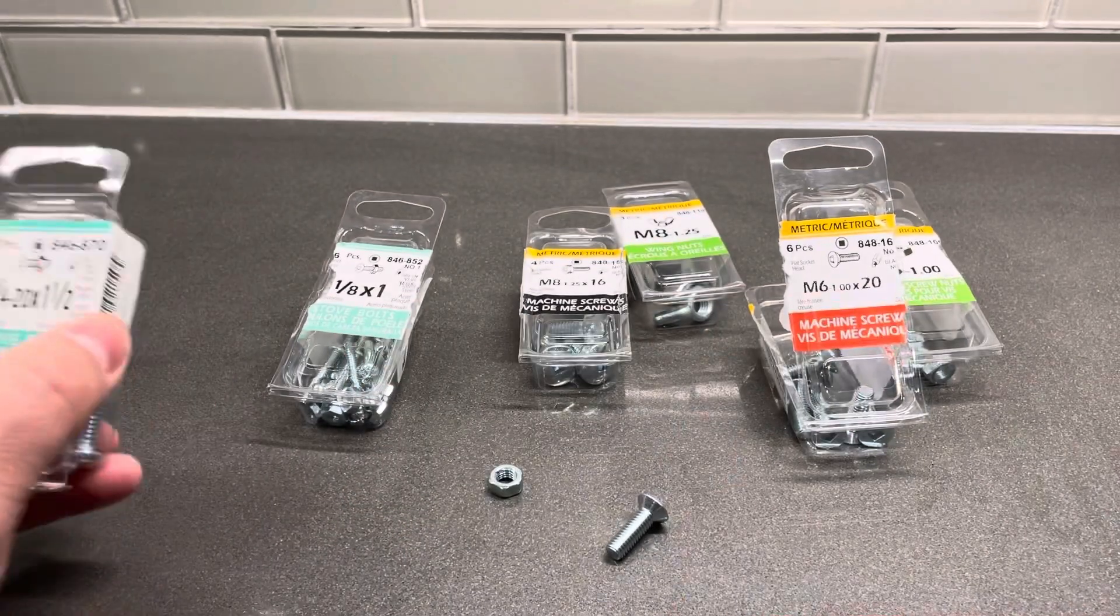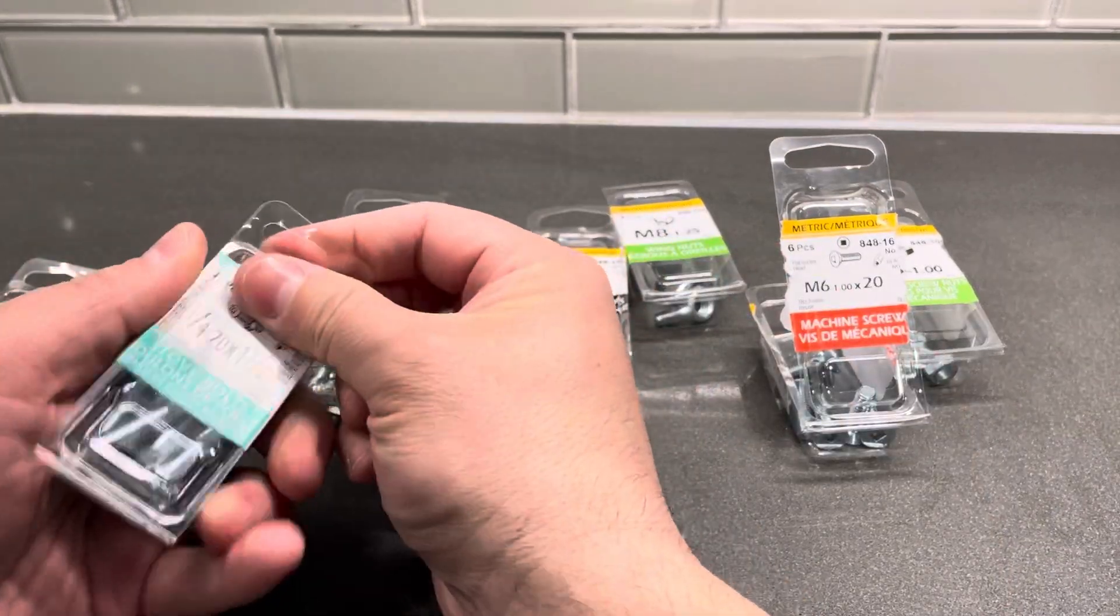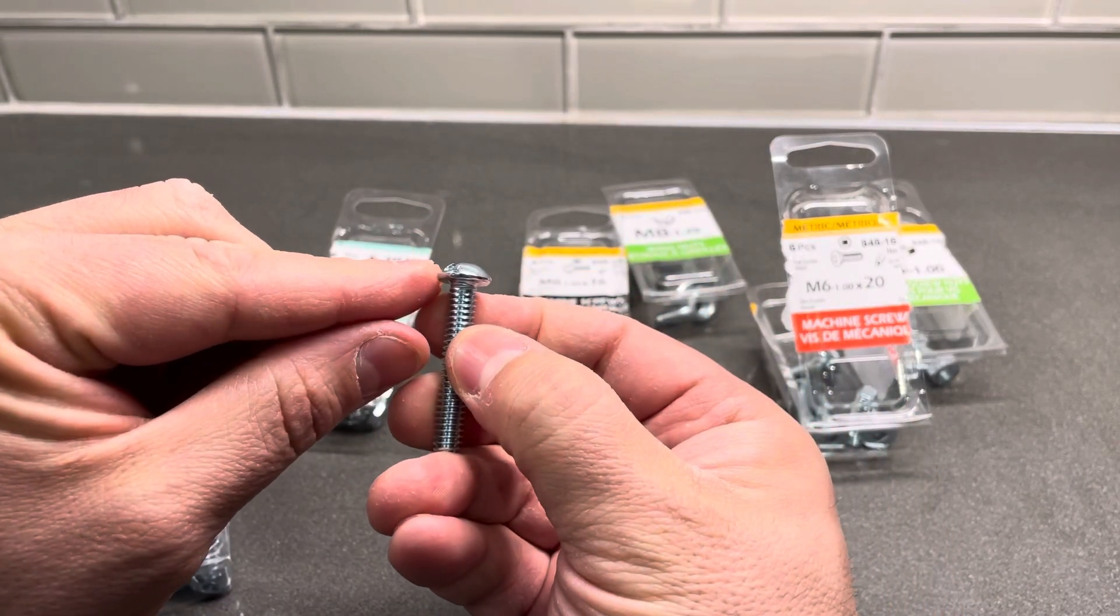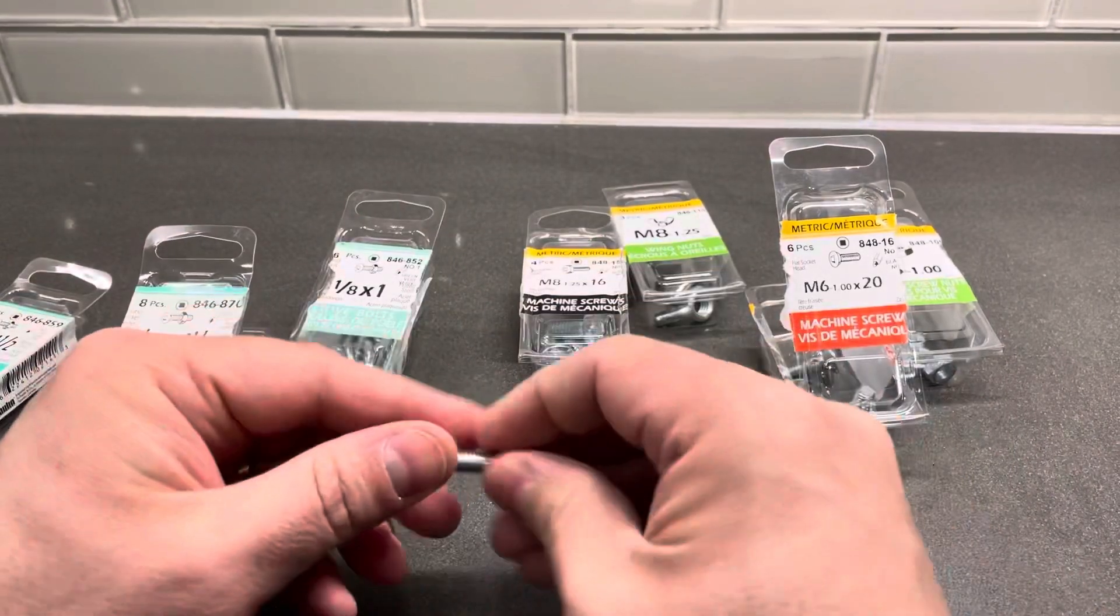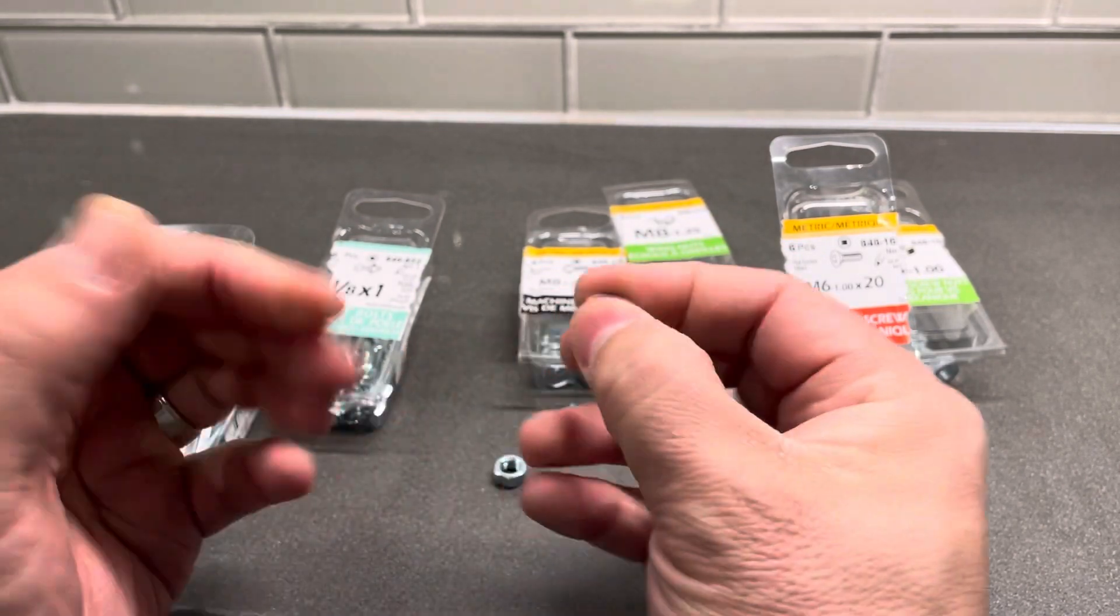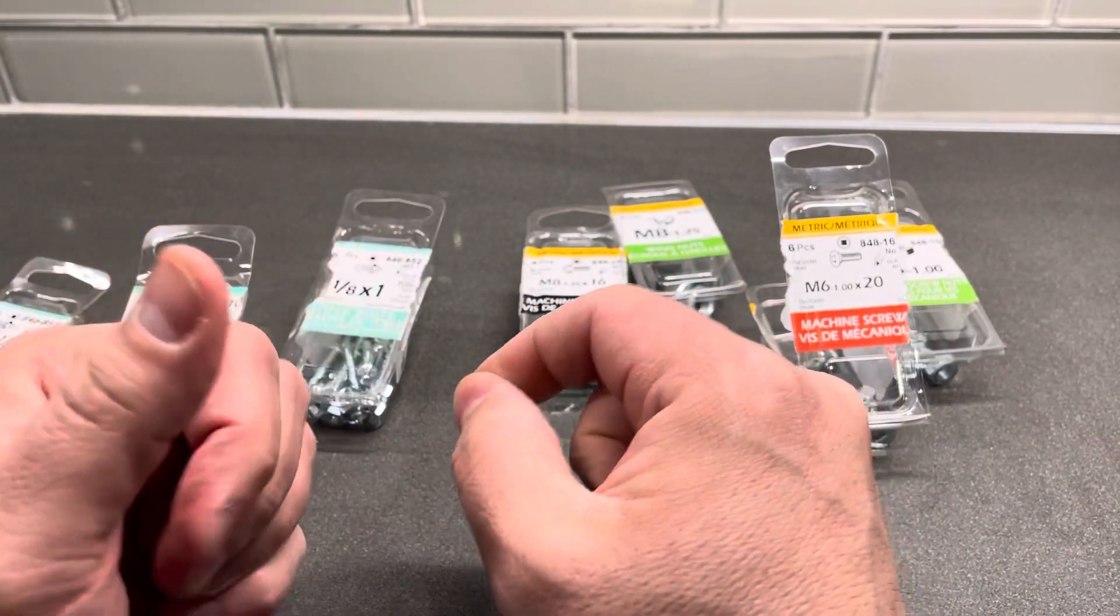You'll also notice that these ones have a rounded off head. You can see right there, that's a rounded off head. And these ones have a flat head with an angle right there. So they're used for slightly different things. It all depends on what you need them for.